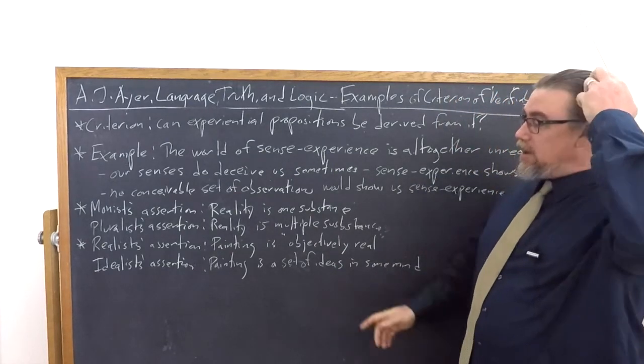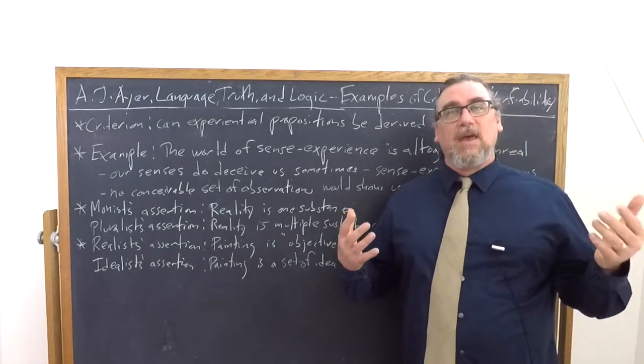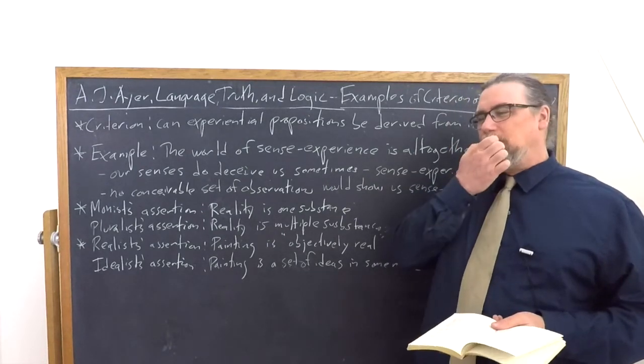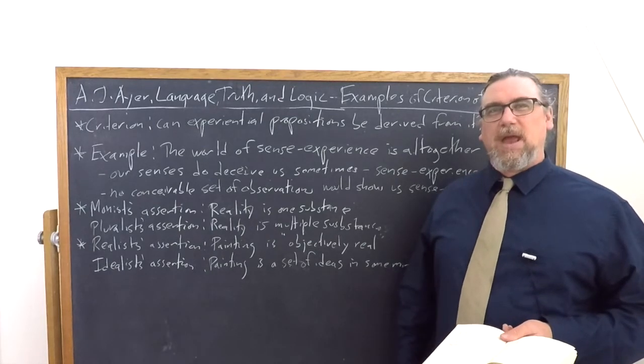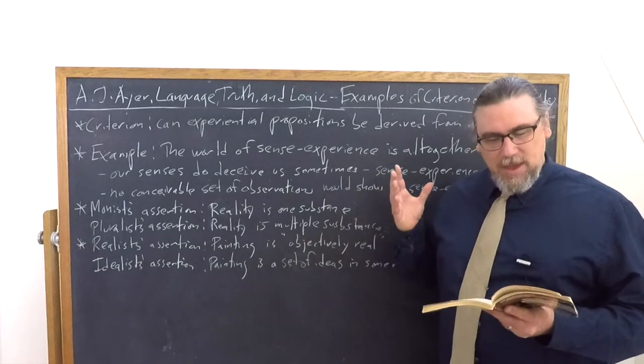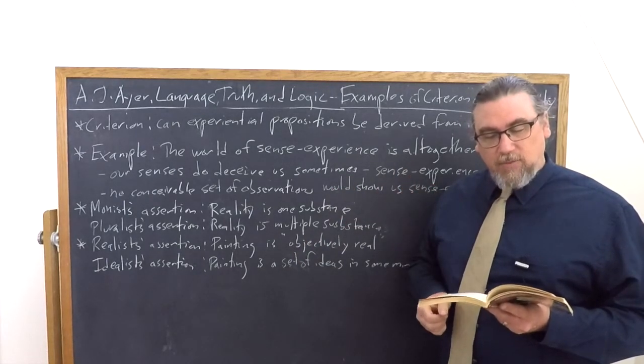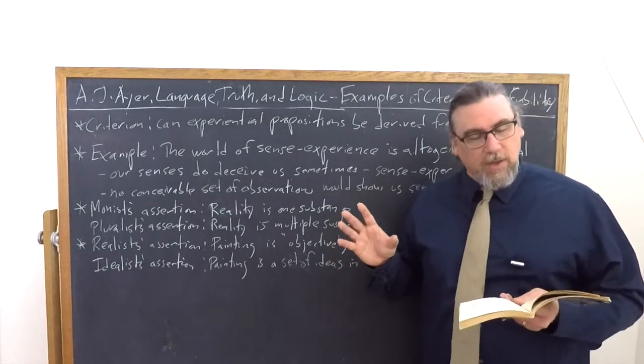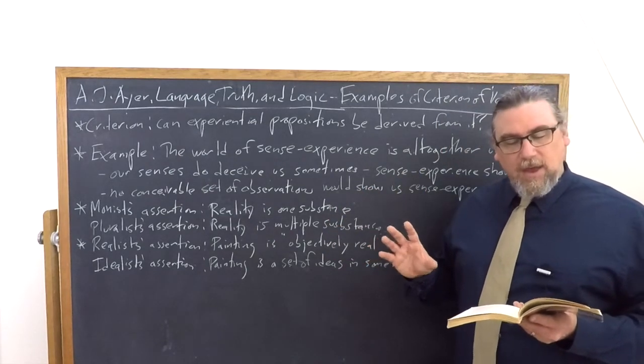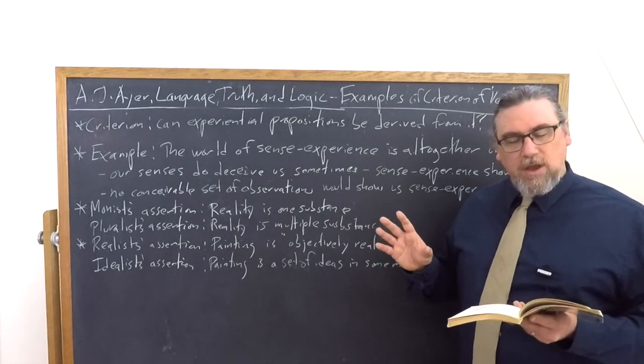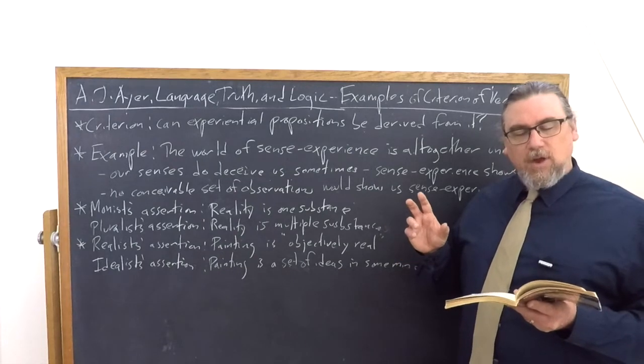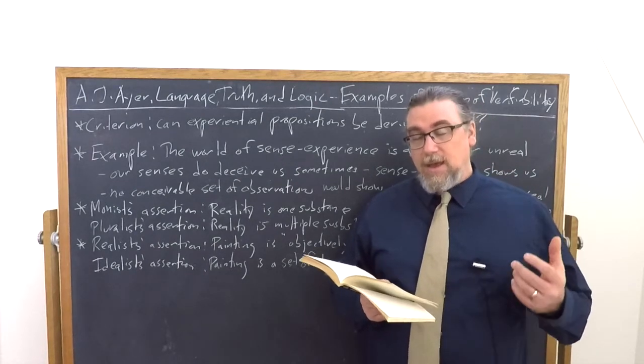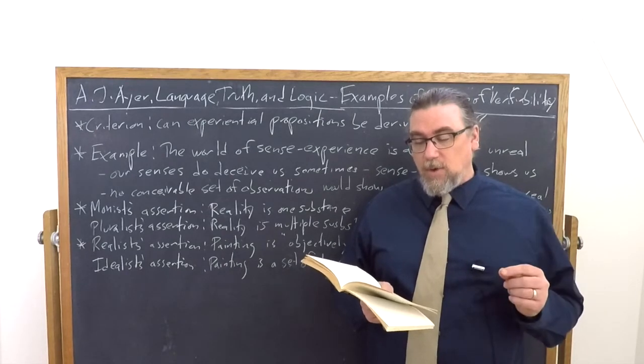The idealist asserts instead that the painting is a set of ideas in our minds or in the mind of God or perhaps in some other mind, right? And those who think that we're actually living within a computer generated matrix would be in a certain sense idealists in this sense, wouldn't they? So he goes on and he says, in the ordinary sense of real, in which it is opposed to illusory, the reality of the picture is not in doubt. They've satisfied themselves that it is real by having a correlated series of sensations of sight and sensations of touch. But could they discover whether the picture was real in the sense in which real is opposed to ideal? He says, clearly, there's no decision procedure for this. There's no way to do that. And then he concludes, if this is so, the problem is fictitious according to our criteria.